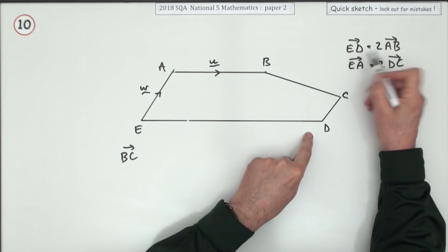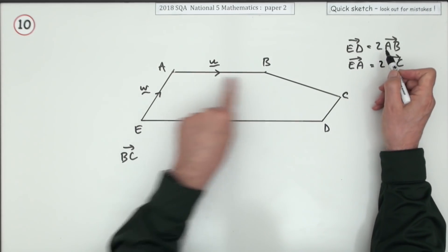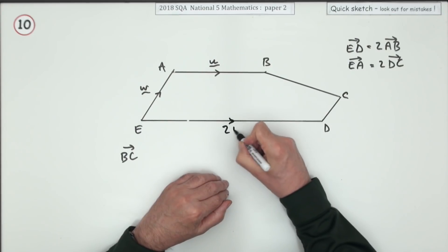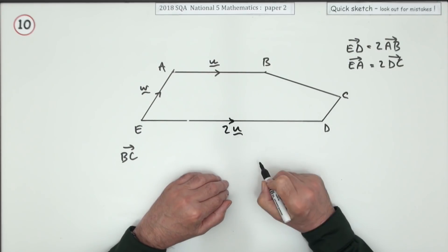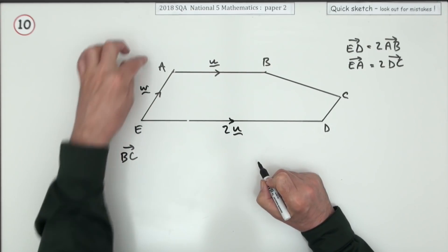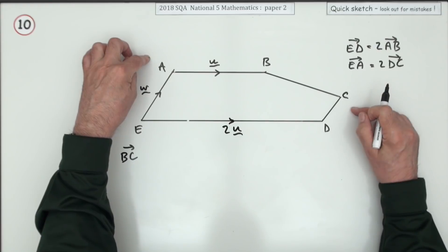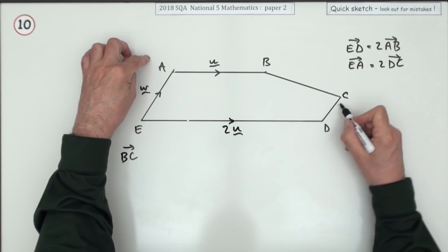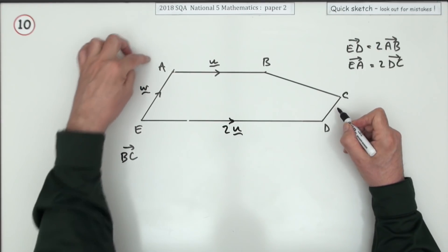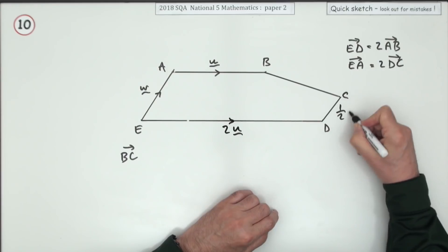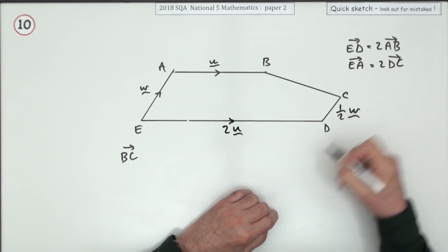Going from E to D, it says, is 2 times A to B, so that'll be 2 lots of u. EA it says is 2 times DC, so they're parallel as well. If that's twice that, then DC is a half of w.